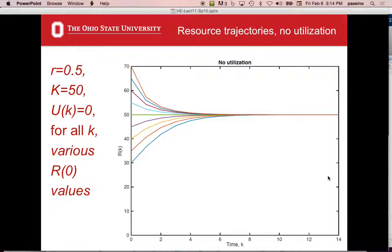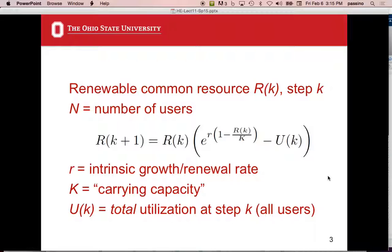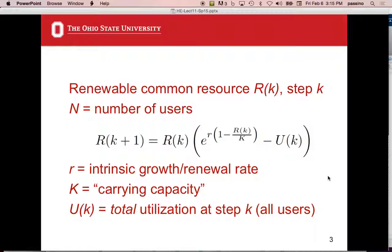Here it is. I just picked some numbers: r equals 0.5, K equals 50. I threw out utilization, no users. I'm going to have some different initial resource values. The first thing to look at is why does it go to 50? Because K is 50. That's where R is going to converge to. It takes just a little bit of math to show that. It's easier just doing simulation.